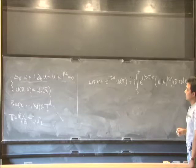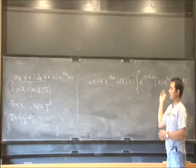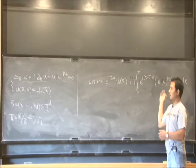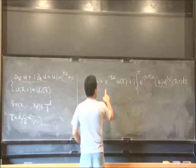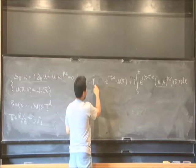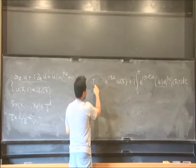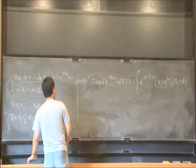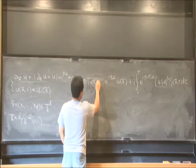Formally, you can write it this way, but obviously this equation does not solve the problem, because you have this u_t on both sides. So what we're going to do is define the right-hand side as operator T on u.